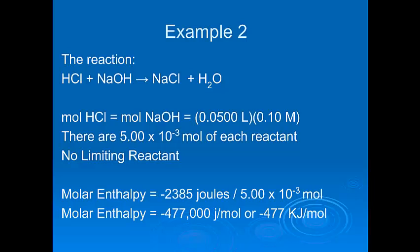That's the molar enthalpy — meaning if you were to do this reaction with one mole of HCl and one mole of sodium hydroxide, you'd produce 477 kilojoules. Notice the negative sign just tells us that heat is going to come out — it's going to be produced. That's how calorimetry works.